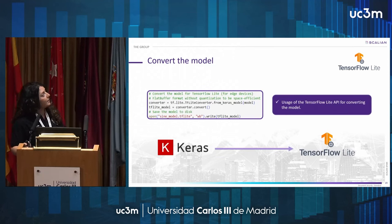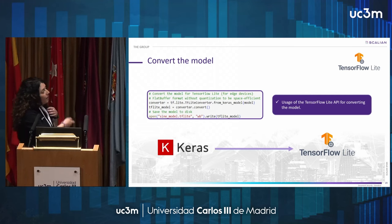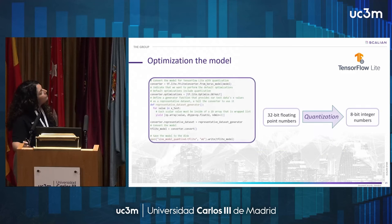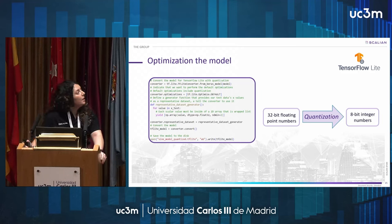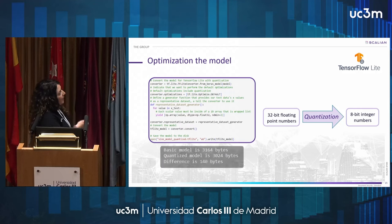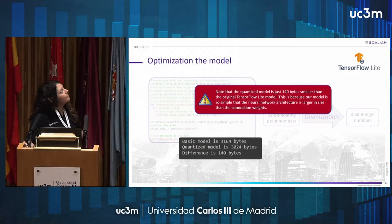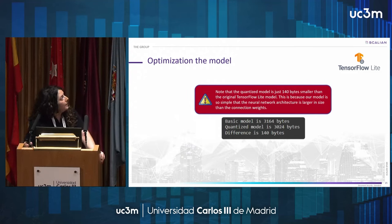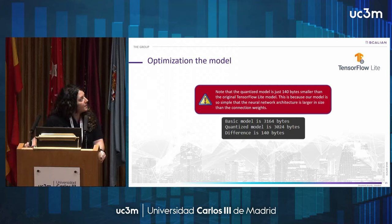Now that the model is trained, we can use the TensorFlow Lite Converter Python API to convert the model to a TensorFlow Lite model. This code snippet performs the model optimization by applying quantization. In our case, the data is reduced from 32-bit floating point numbers to 8-bit integer numbers. If we compare the base model and the quantized model size, we have a size reduction of 140 bytes. Note that the quantized model is only 140 bytes smaller than the original TensorFlow Lite model because our model is so simple that the neural network architecture is larger in size than the connection weights.